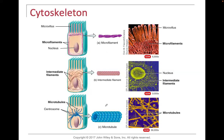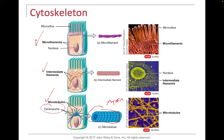The cytoskeleton comes in three types: microfilaments, which are the thinnest; intermediate filaments, which are a little thicker; and microtubules, which are the thickest. Microtubules are found in muscle as myosin, and they're also involved with the centrosome making up those spindles.